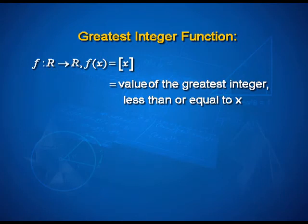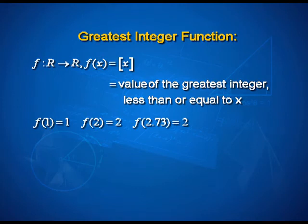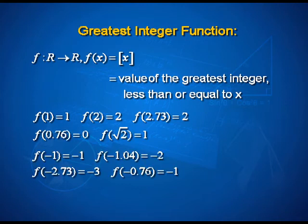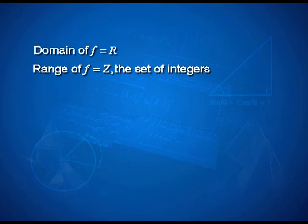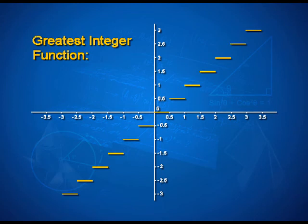So, greatest integer function is again one of the very significant and something very unusual here. It is defined to be the value of the greatest integer less than or equal to x. So, if I have to ask you to find what is f of 2 and then f of 2.73, they both take the value 2. Greatest integer less than equal to 2.73 is 2. Similarly, f of minus 1.04, the greatest integer less than minus 1.04 is negative 2 and so on. So, the domain of f is all real numbers, but the range is always, the outputs are always integers and therefore, the range is set of integers. Graph looks very interesting here. What would you call it? A step like function. It takes the formation of steps and therefore, the greatest integer function is often read as step like function. Try plotting this now on your own on graph paper and see if you do get exactly what I have here on the screen.